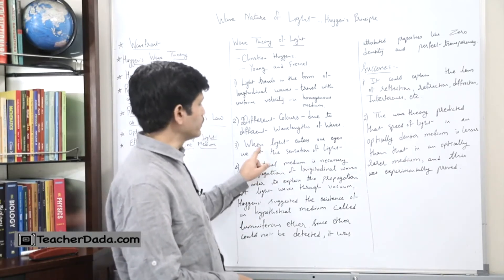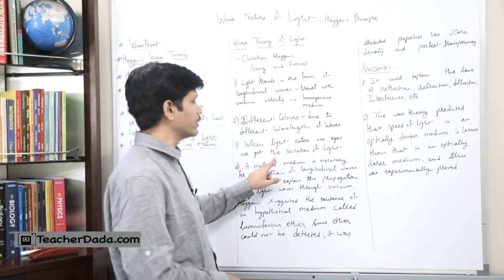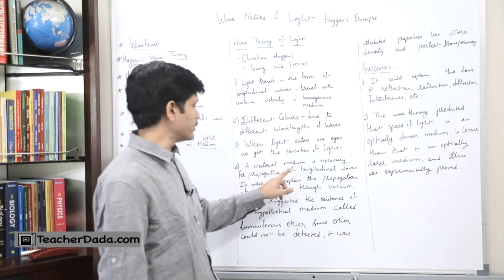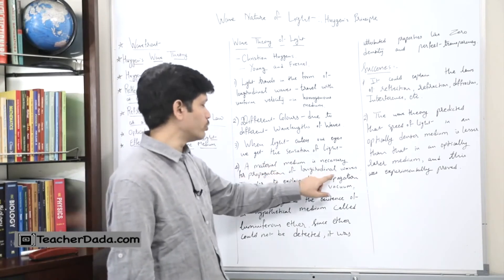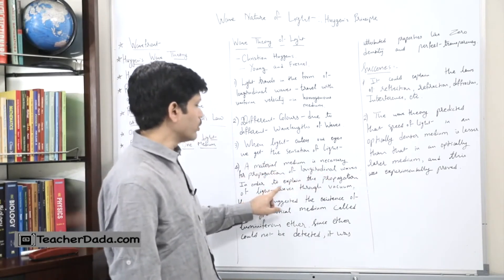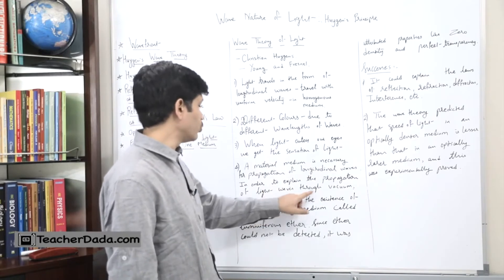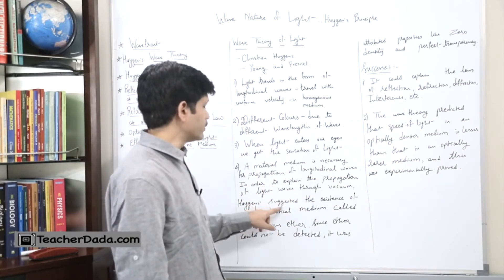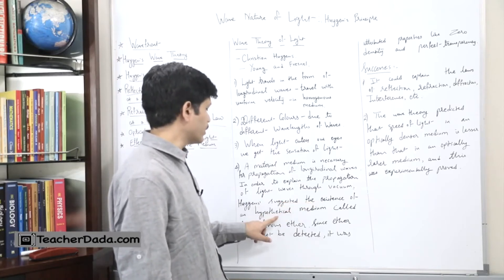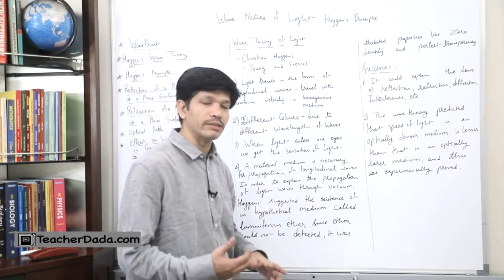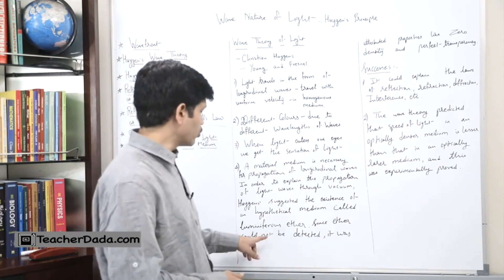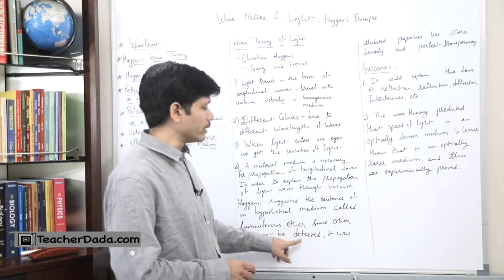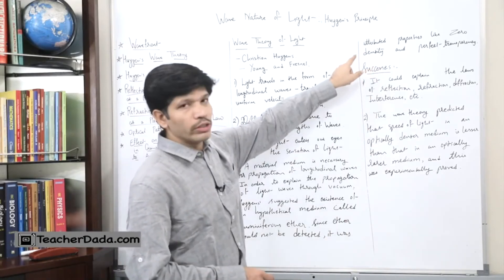Fourth point is a material medium is necessary for propagation of longitudinal waves. In order to explain the propagation of light waves through vacuum, where there is no air, Huygens suggested the existence of a hypothetical medium called luminiferous ether. But later on, since ether could not be detected, it was attributed certain properties.